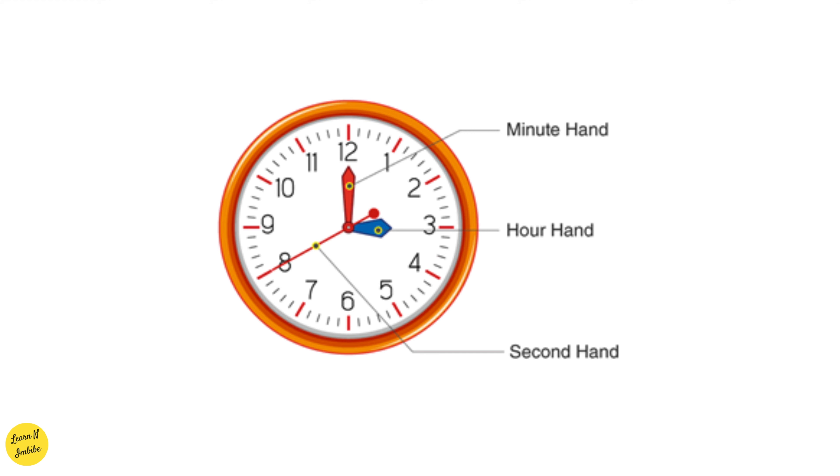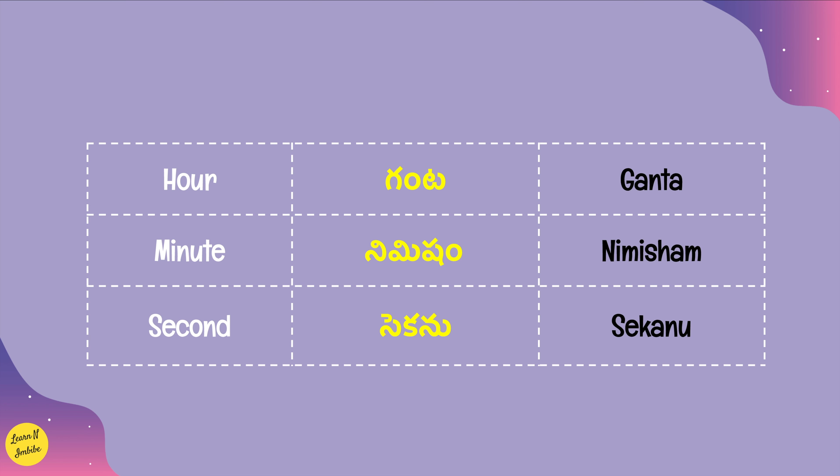Now let's see each in detail. An hour in Telugu is called Ganta. This is the singular form and the plural form is made by adding the suffix 'lu', making it Gantalu. Similarly, minute is Nimisham and the plural form is Nimishalu. Second in Telugu is known as Sekanu and the plural form is also Sekanu.